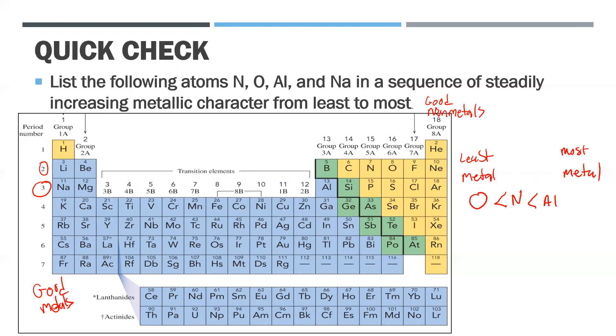And last but not least, sodium. Sodium would be the most metallic. In fact, sodium is extremely reactive - like all alkali metals in group one, they are very reactive. So that has the most metallic character.